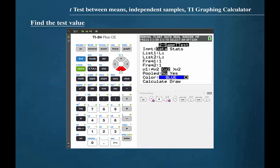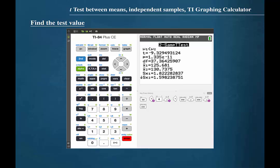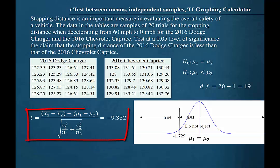Now cursor down to calculate and press enter. The calculator then gives us the t-test value of negative 9.329. The discrepancy between this value and the value obtained in the previous video is due to the use of rounded values when calculating the t-test value by hand.